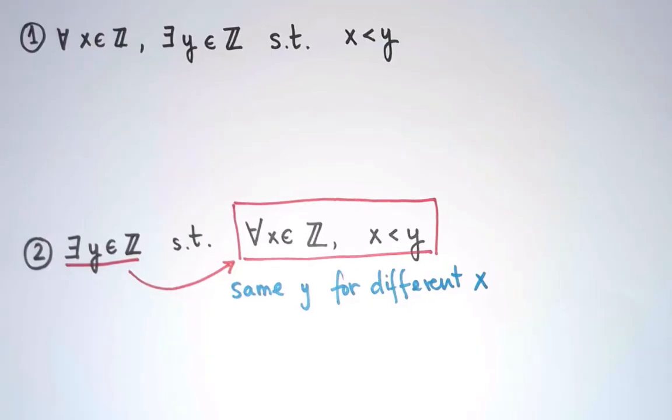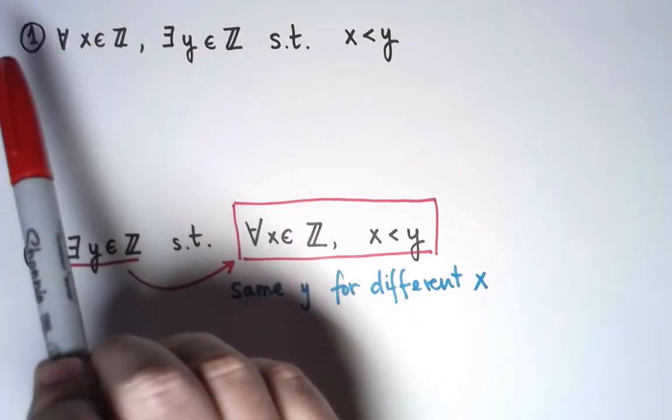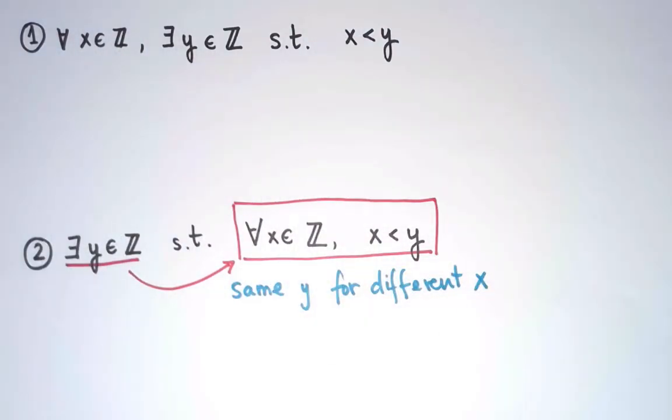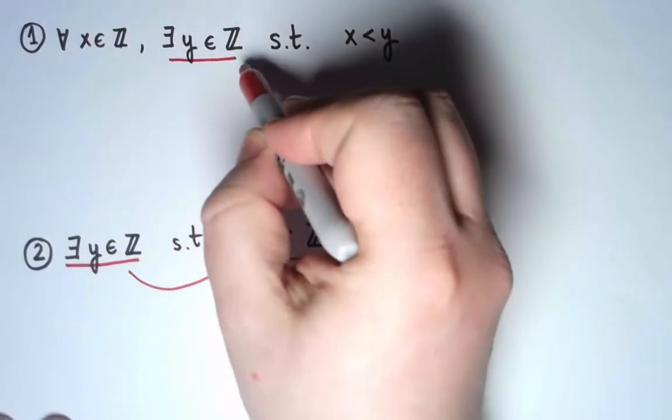On the other hand, in the first statement, we begin by saying that for every integer x, there exists a y with a property. So now I'm saying there exists a y that has this property.